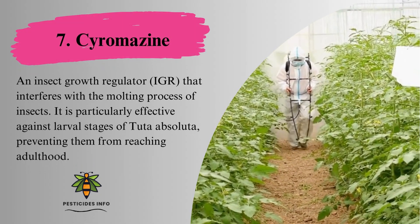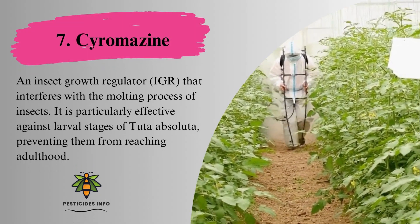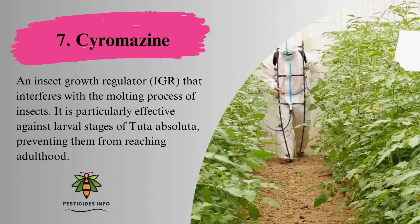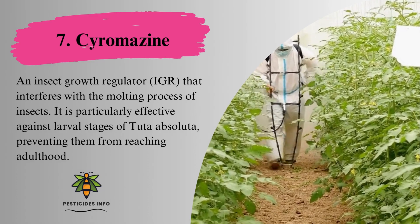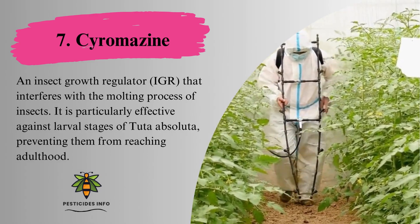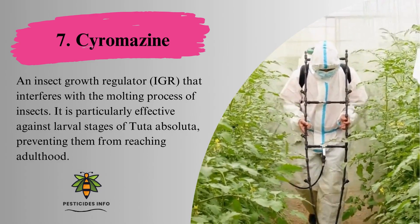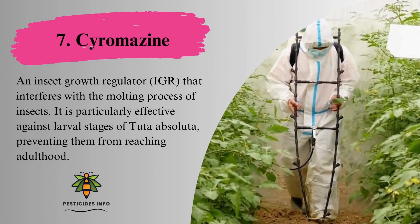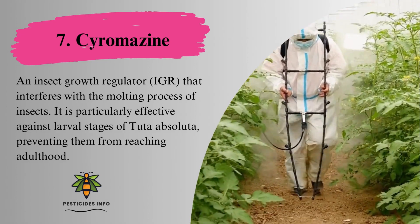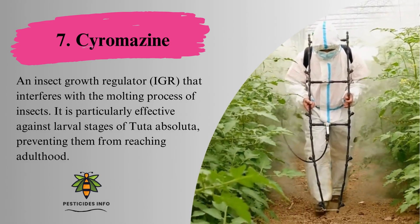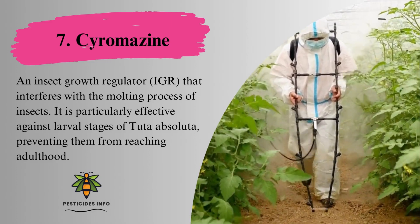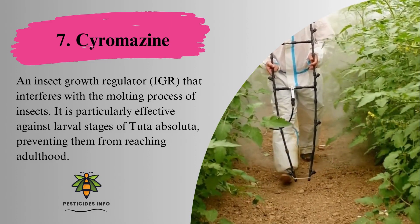7. Cyromazine, an insect growth regulator (IGR) that interferes with the molting process of insects. It is particularly effective against larval stages of Tuta absoluta, preventing them from reaching adulthood.